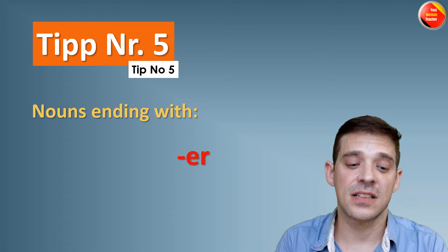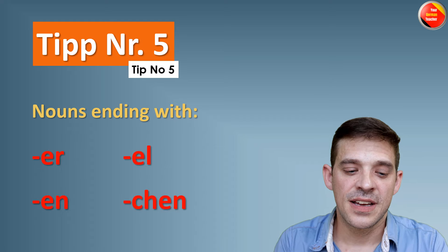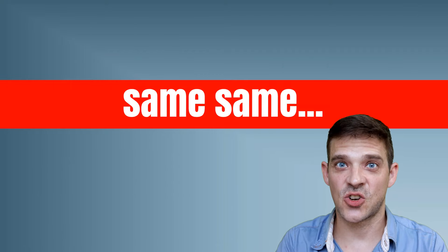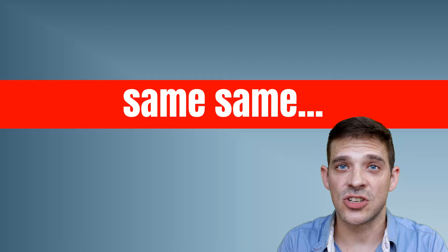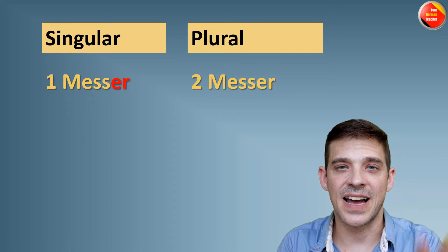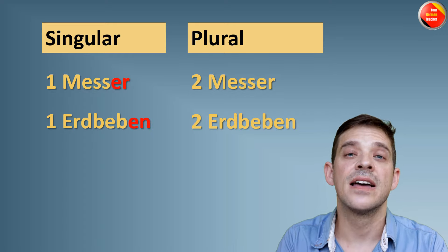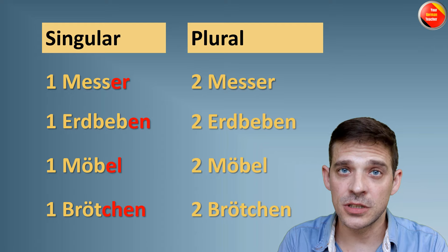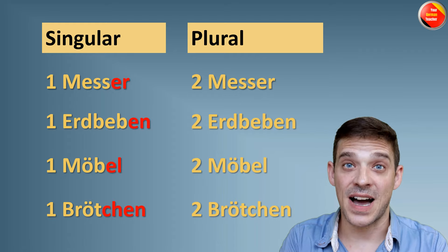Tipp number fünf — nouns ending with ER, EN, EL, and chen. Chen is the diminutive form. In 90% of cases, don't do anything — the singular and plural form is the same. Zum Beispiel: ein Messer (knife) → zwei Messer. Oder ein Erdbeben (earthquake) → zwei Erdbeben. Oder ein Möbel (furniture) → zwei Möbel. Oder ein Brötchen, the small round buns → zwei Brötchen.